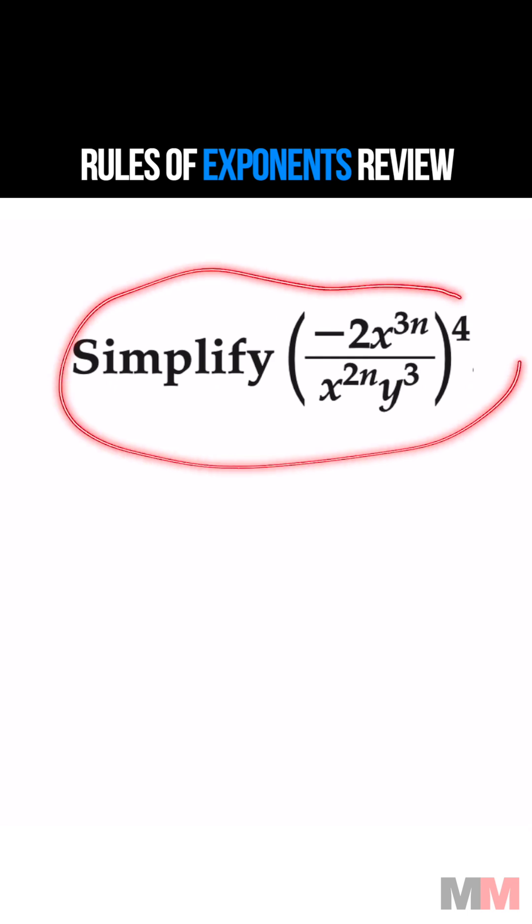We're going to simplify this expression right here. All these variables inside have their own exponents. Even the constant number negative two has an exponent - it has an imaginary one.